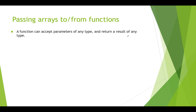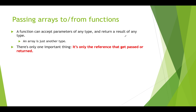A function can accept parameters of any type and return a result of any type, and that's not any different for arrays. Arrays are just another type. There is one important difference when we're passing arrays to and from functions in Java or Processing, and that is to know that only the reference gets passed or returned. When you pass an array into a function, the function is getting a shallow copy of that array.